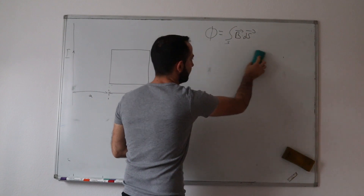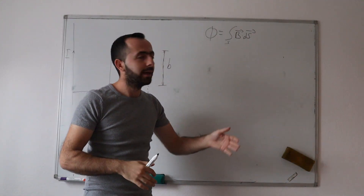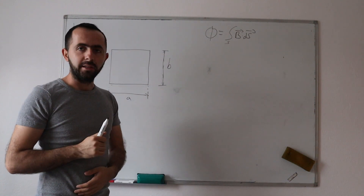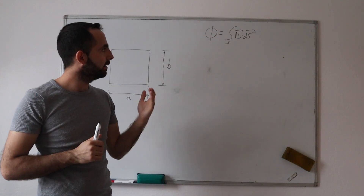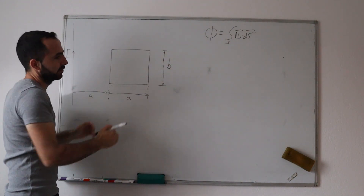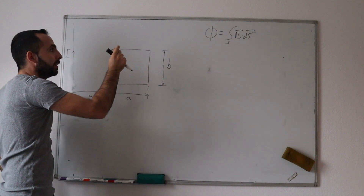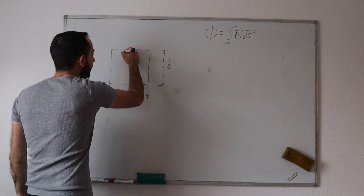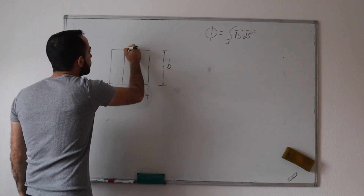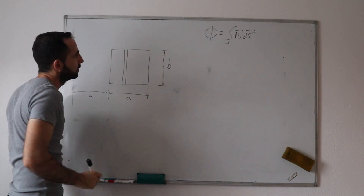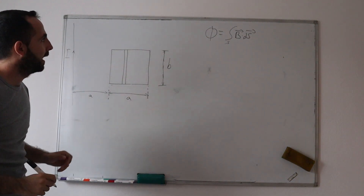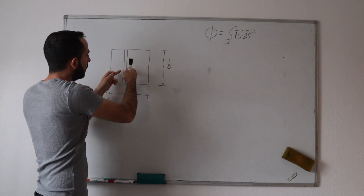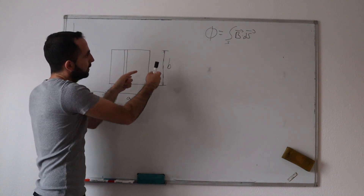We already know about B — how its direction is determined, its amplitude, intensity, etc. But what is dS? If we have this total surface, dS is the infinitely small part of this surface. We will divide this total surface into infinitely small surfaces — that is dS. If we want to calculate the total flux, then we only sum up all of these surfaces, and that's why the integral is used.